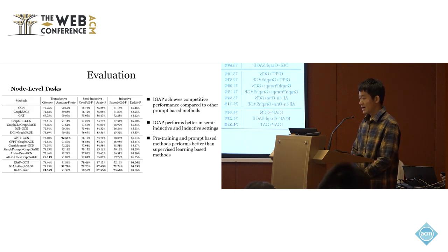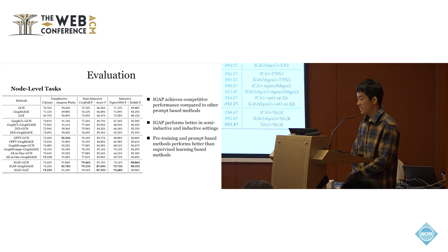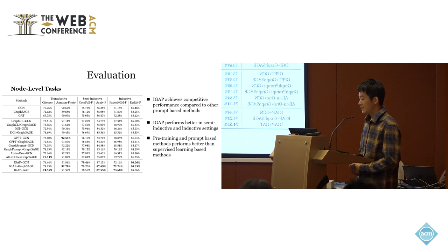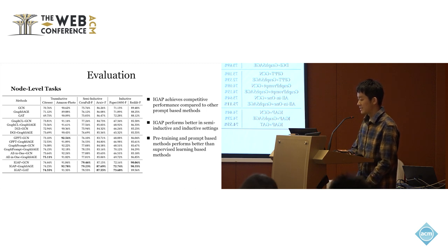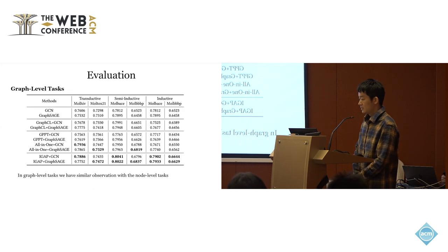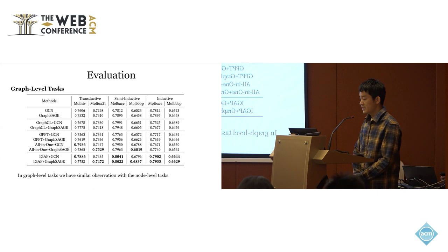For the node-level task, we find that: first, iGAP can achieve competitive performance compared to other baselines; second, iGAP can perform better in the semi-inductive and inductive settings; and third, we find that the pre-training and prompt learning baselines perform better than the supervised learning methods. For the graph-level task, we also have similar observations, where iGAP can perform better in the semi-inductive and inductive settings.